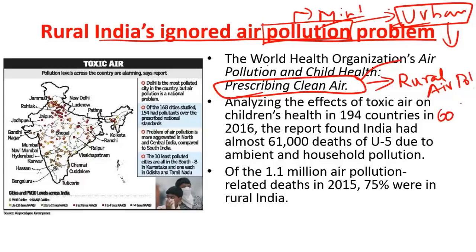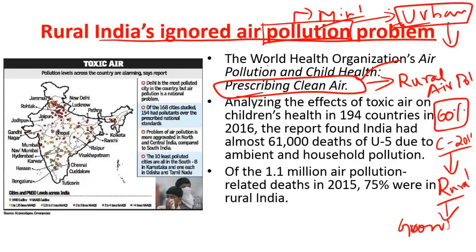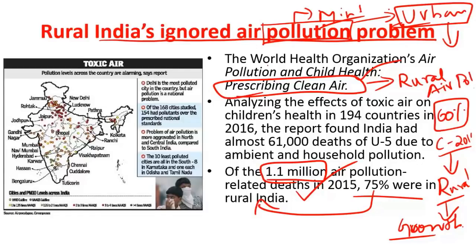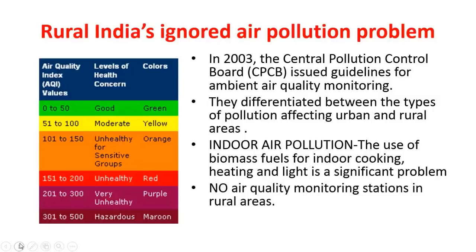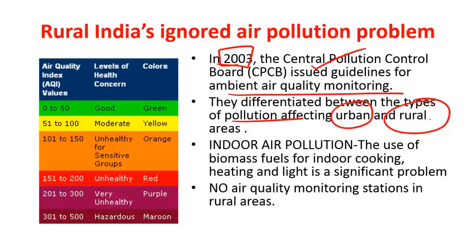About 60% of India's population, according to Census 2011, is still living in rural areas, making it very important to tackle air pollution there. According to the WHO report, of over 1.1 million air pollution deaths that occurred till 2015, 75% were in rural areas. The issue of rural air pollution was first brought to light in 2003 by the Central Pollution Control Board's guidelines for ambient air quality monitoring, which for the first time differentiated between air pollution affecting rural and urban areas.